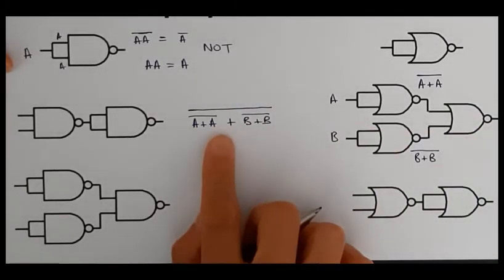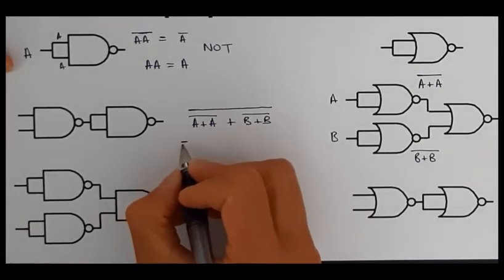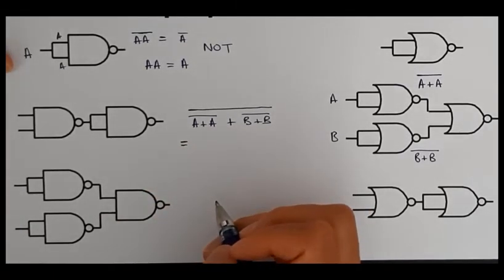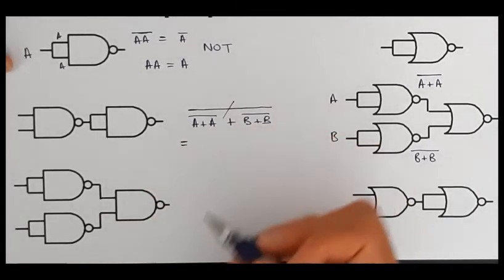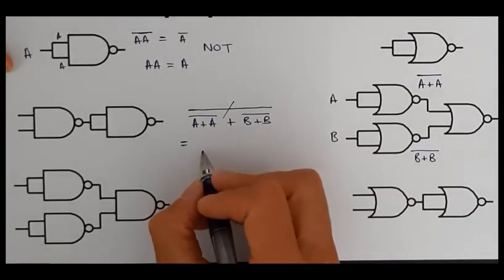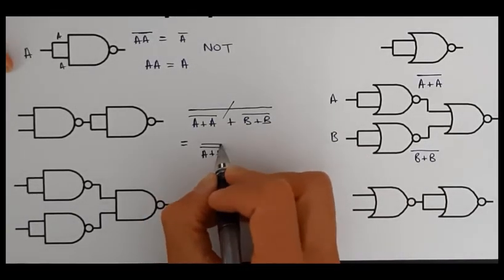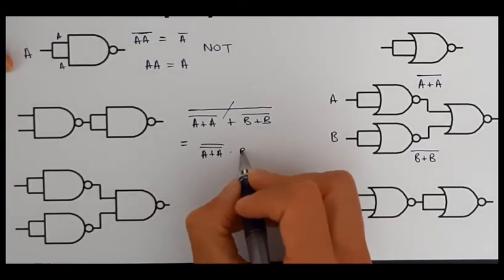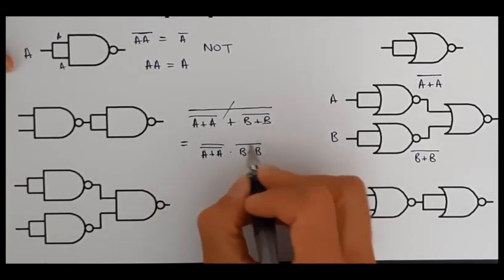And in order to work out what this is we need to be able to simplify and we can use De Morgan's Laws. So we know break the line, change the sign. So I'm going to end up with (A + A)̅̅ AND (B + B)̅̅.